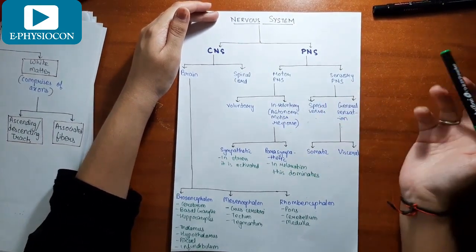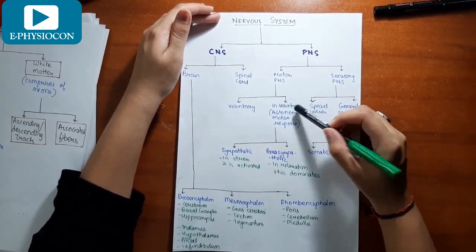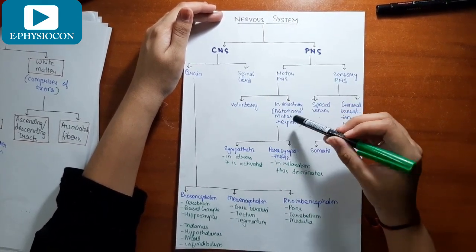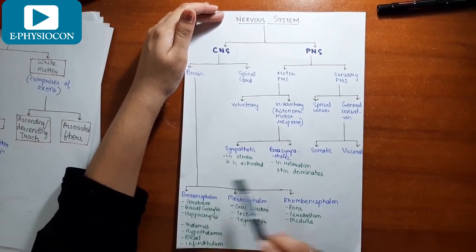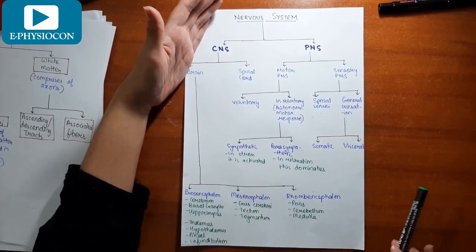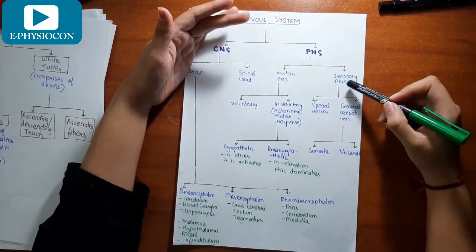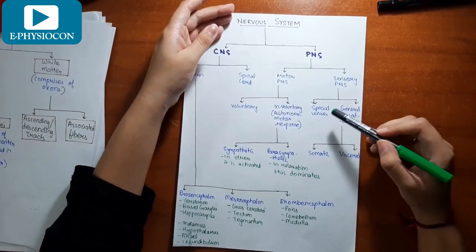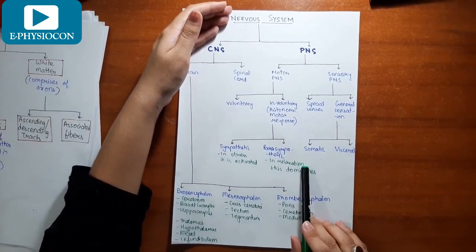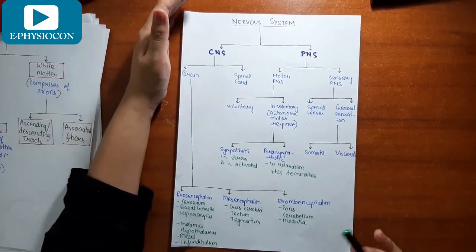The motor peripheral nervous system consists of the voluntary and involuntary divisions. The involuntary is further called the autonomic motor response, which is divided into sympathetic and parasympathetic. In any kind of stress condition the sympathetic is activated, and in relaxation parasympathetic dominates. The sensory peripheral nervous system consists of special senses and general sensation, with general sensation divided into somatic and visceral — for example, abdominal cramps are a visceral pain.